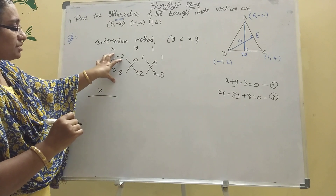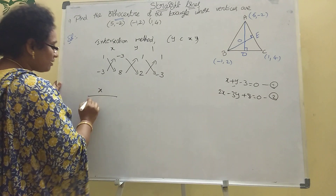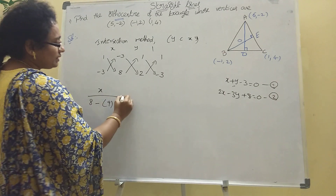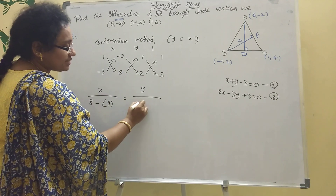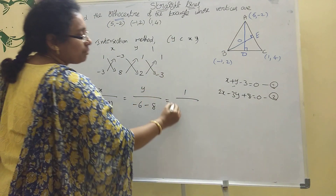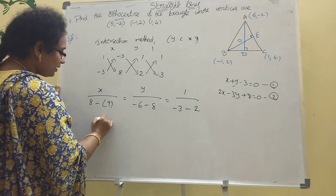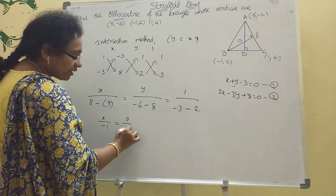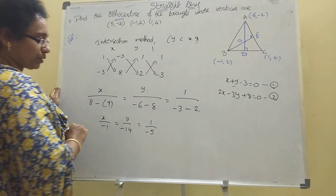Applying cross multiplication: x / (1×8 - (-3)×(-3)) = x / (8 - 9) = x / (-1). For y: y / (-((-3)×2 - 8×1)) = y / (-(-6 - 8)) = y / 14. Denominator: 1×(-3) - 2×1 = -3 - 2 = -5. So x/(-1) = y/(-14) = 1/(-5).